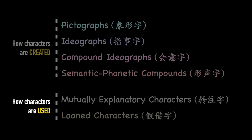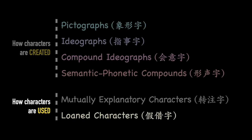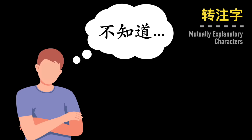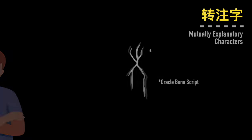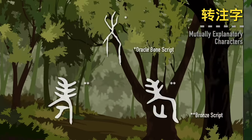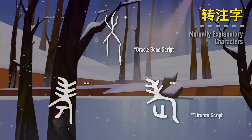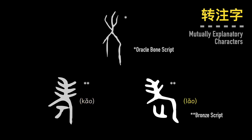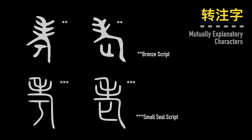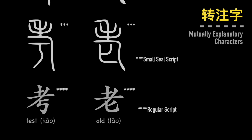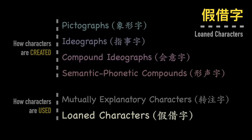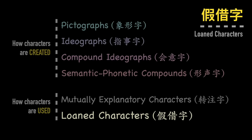And now back to your regular programming. The last two categories in Liu Shu describe ways that characters are used, not how they're created — and they are Mutually Explanatory Characters and Loan Characters. Mutually Explanatory Characters are honestly difficult to explain and don't occur very often. It explains a phenomenon when one character evolves into two different characters over time or across different regions. For example, kao and lao were originally one character meaning the long one, but one went on to mean a measure of aptitude while the other went on to mean long in age.